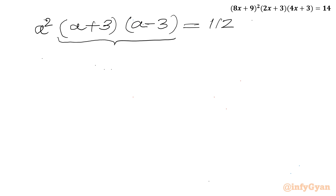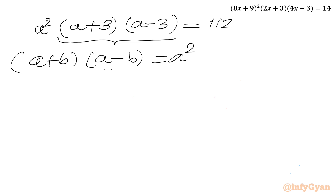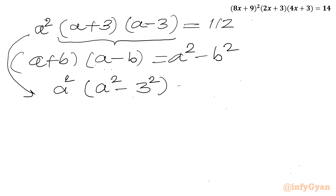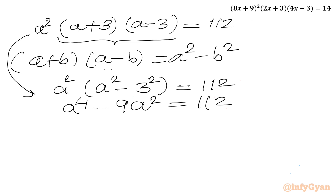Here we can apply the difference of two squares formula: (a + b)(a − b) = a² − b². So I can write the equation as a² times (a² − 3²) equal to 112, or a⁴ − 9a² equal to 112, or a⁴ − 9a² − 112 equal to 0.